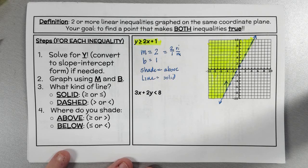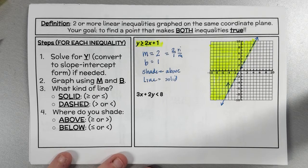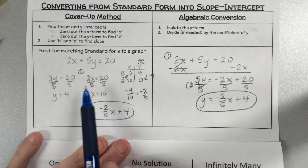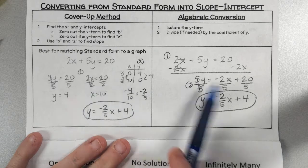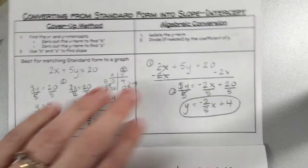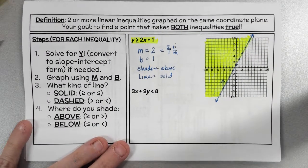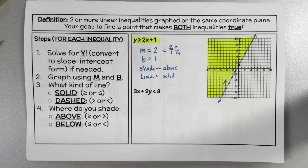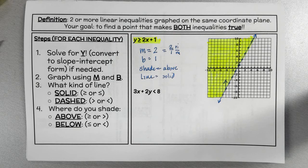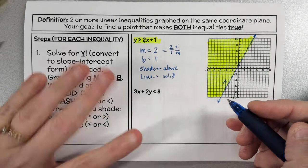For the second inequality, we were able to do shade above/below because the first was in slope-intercept form, but this one isn't. You have choices: you can convert it or use the cover-up method to plot the line. You still need to figure out the shading direction — we covered that in the last unit, so review those videos if needed. I'm going to do algebraic conversion. Practice converting this into slope-intercept form and pause the video.